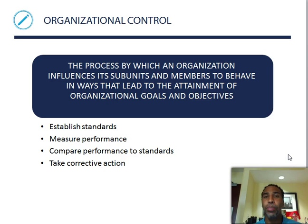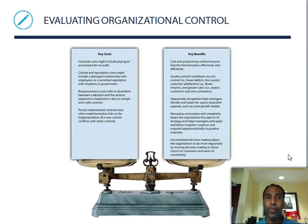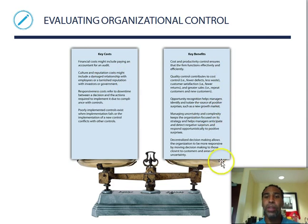Our objectives are like sprints — short-term — while our goals are a little more long-term. We want to establish standards, measure performance, compare performance to those standards, and take corrective action when necessary. These are how you evaluate organizational control. You look at the key costs and the key benefits, just like on the scales of justice.